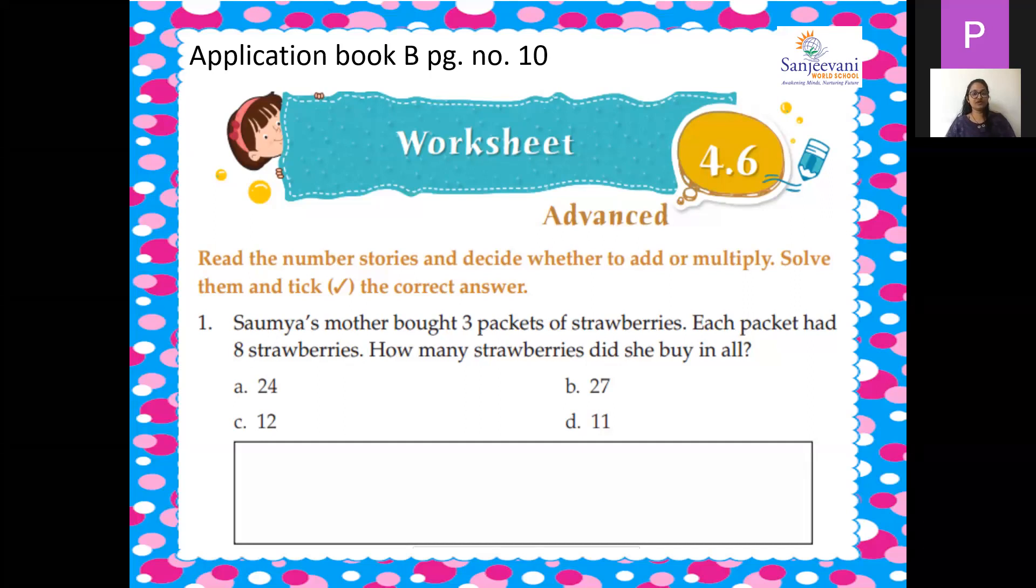So first question. Sonia's mother bought 3 packets of strawberries. Each packet had 8 strawberries. So how many strawberries did she buy in all? So 3 packets of 8 strawberries. So she brought 3 packets, and in one packet there were 8 strawberries.